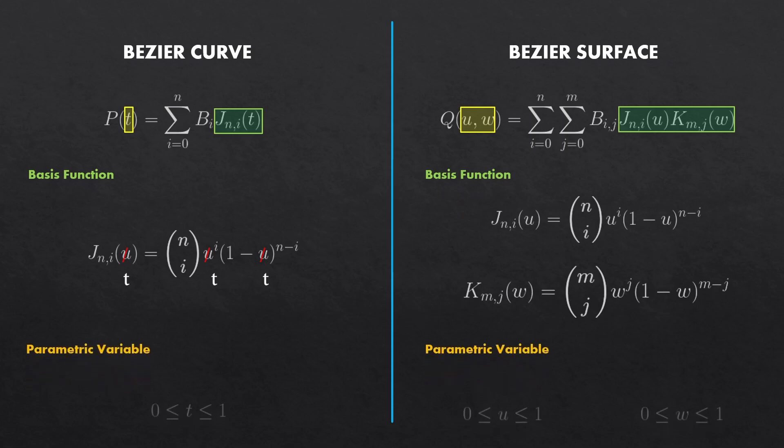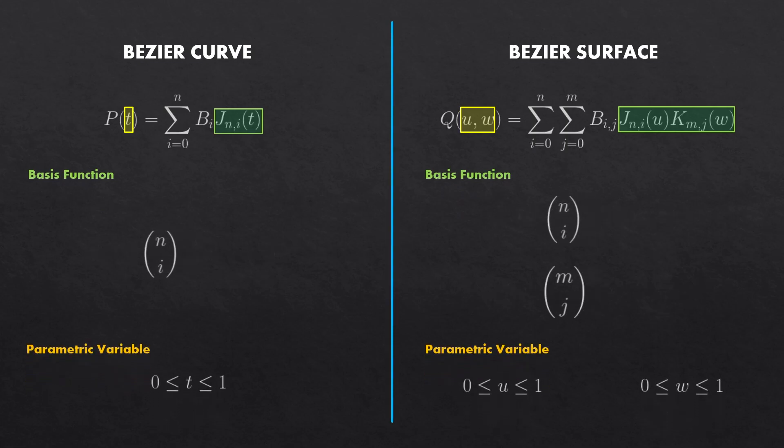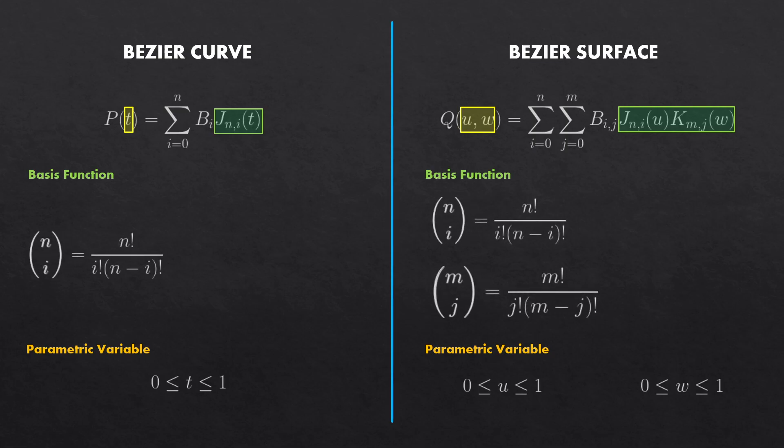Now the equation depends on u and w. Both of them, u and w, go from 0 to 1.